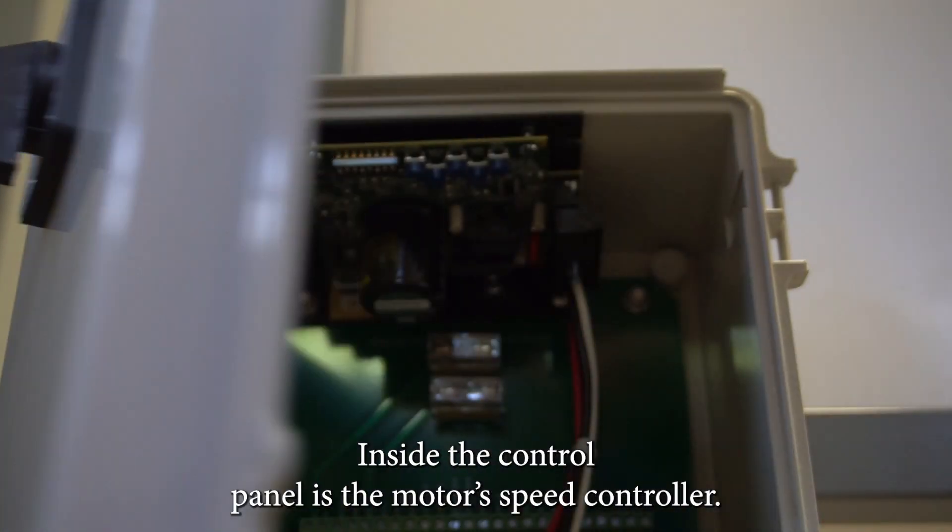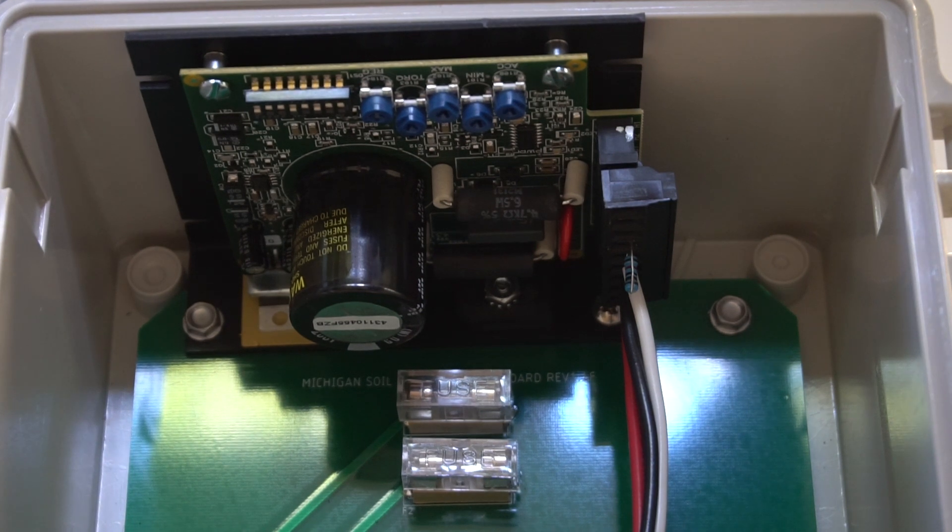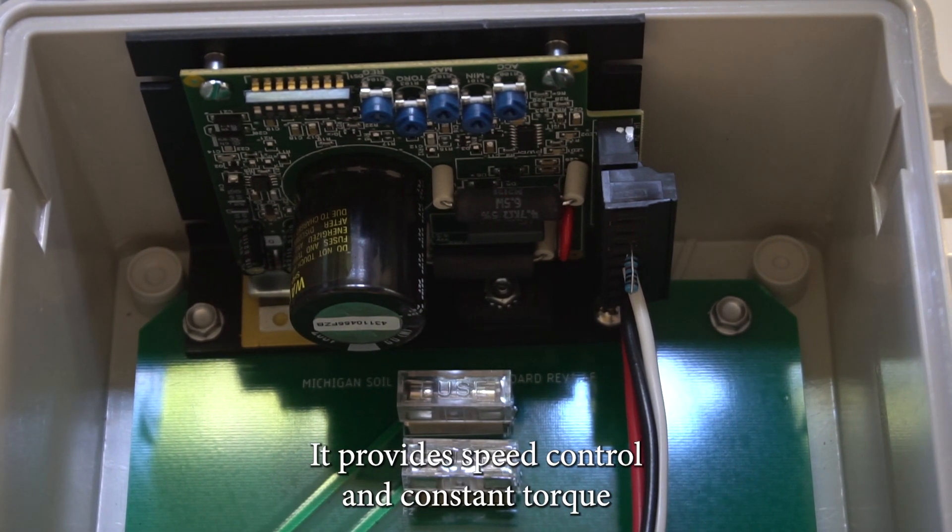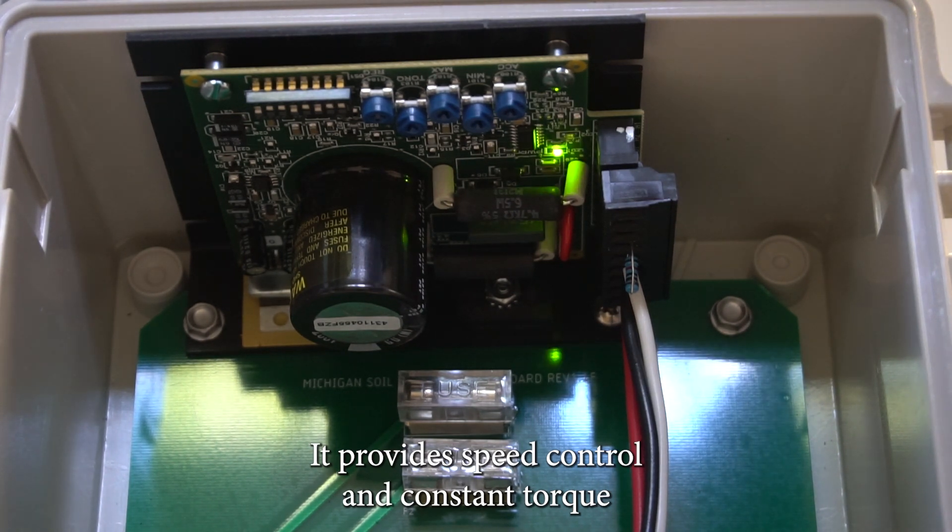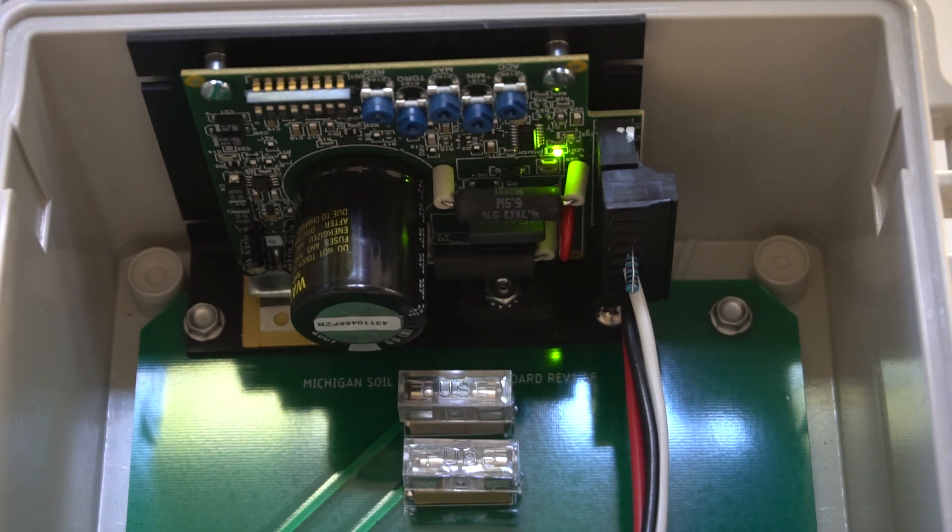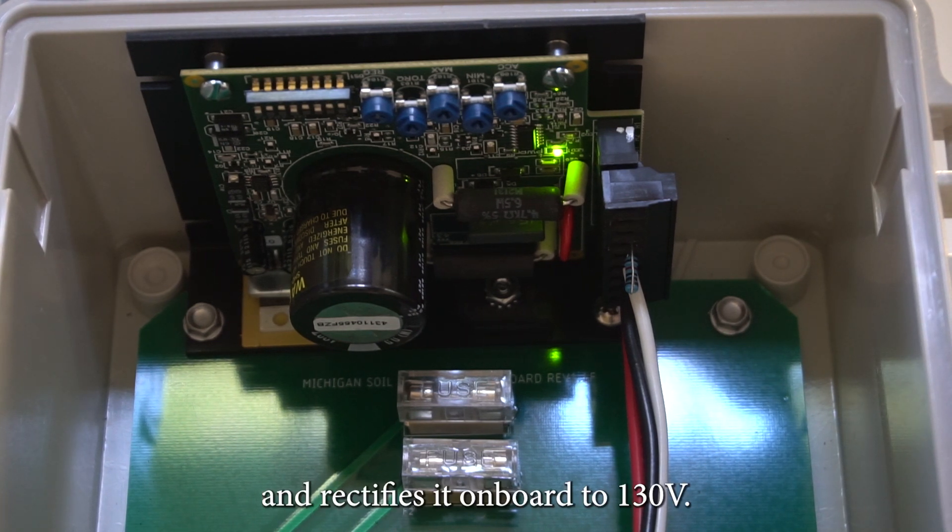Inside the control panel is the motor's speed controller. It's based on circuitry known as filtered pulse width modulation. It provides speed control and constant torque in any condition and reduces overheating. It takes standard 115 volt AC line input from the wall outlet and rectifies it on board to 130 volts DC.